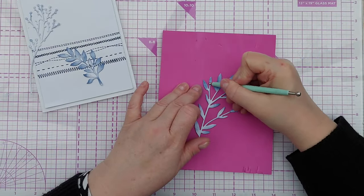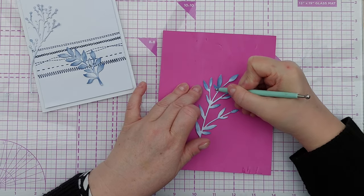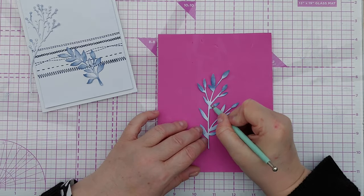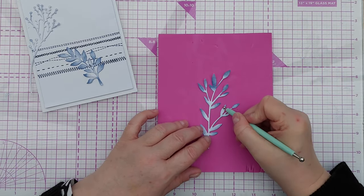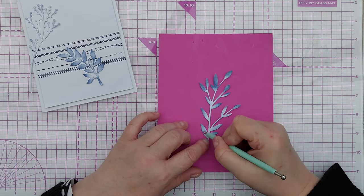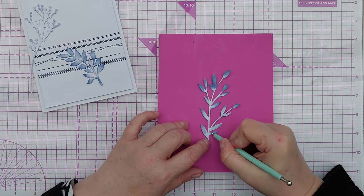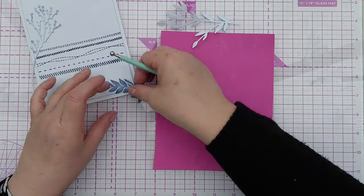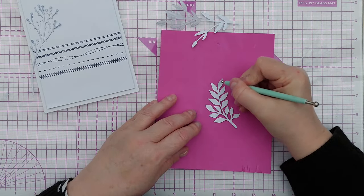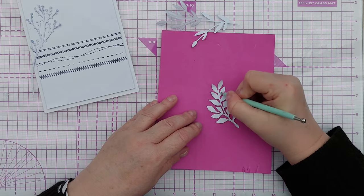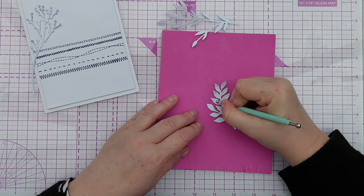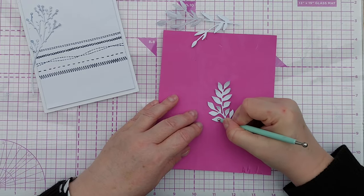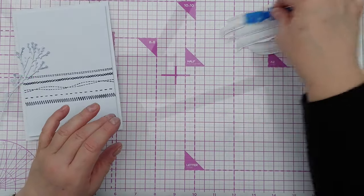Before adhering my die cuts I wanted to give them a little bit of dimension. The one that's going at the back is going to stay flat, the middle one I used an embossing tool and pressed it down on the front so the leaves curled forwards and on the little one the one that's going to go at the very front I used an embossing tool on the back of the leaves so they curl backwards and when the die cut is on the front of the card it will sort of stand proud a little bit.